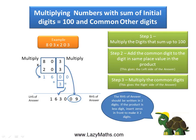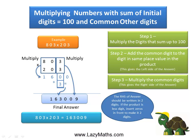Combining the left and right sides of the answer, we get the final answer of 163,009. Hence, 803 times 203 equals 163,009. And that's it. Thank you.